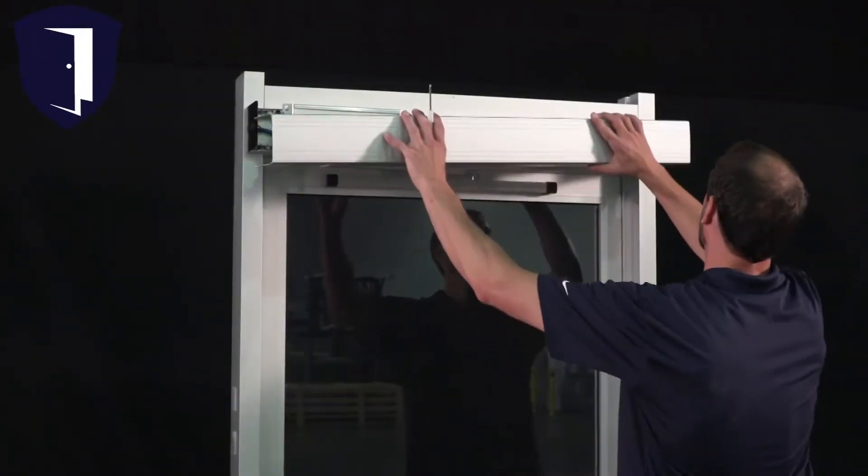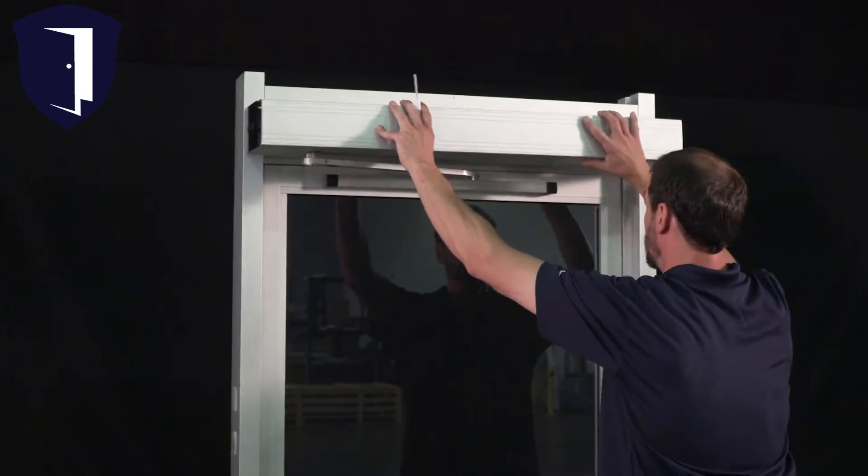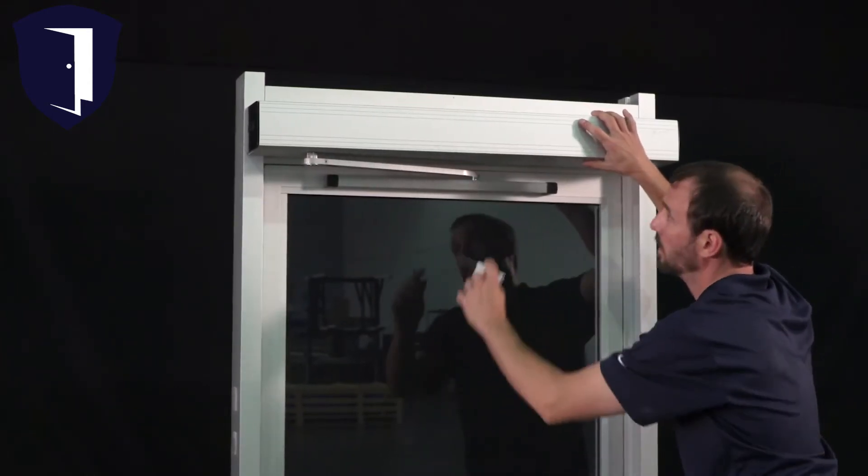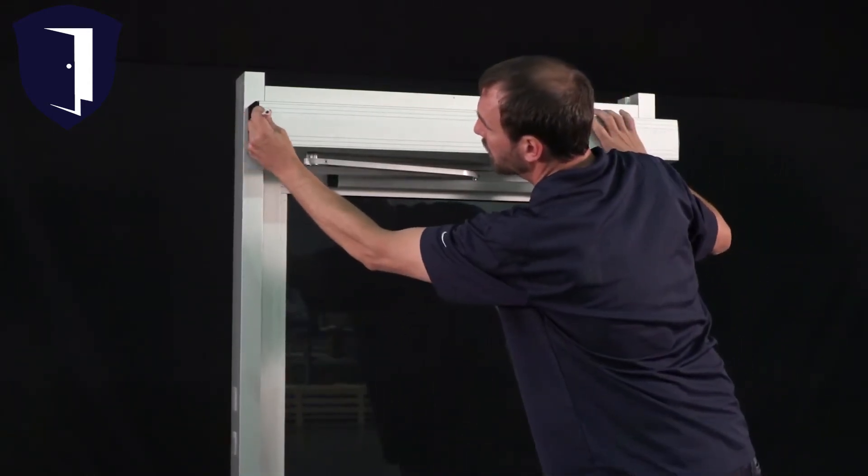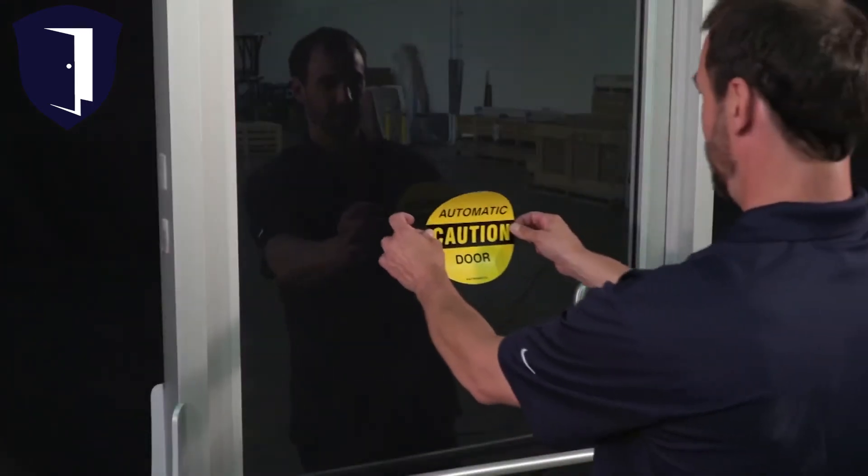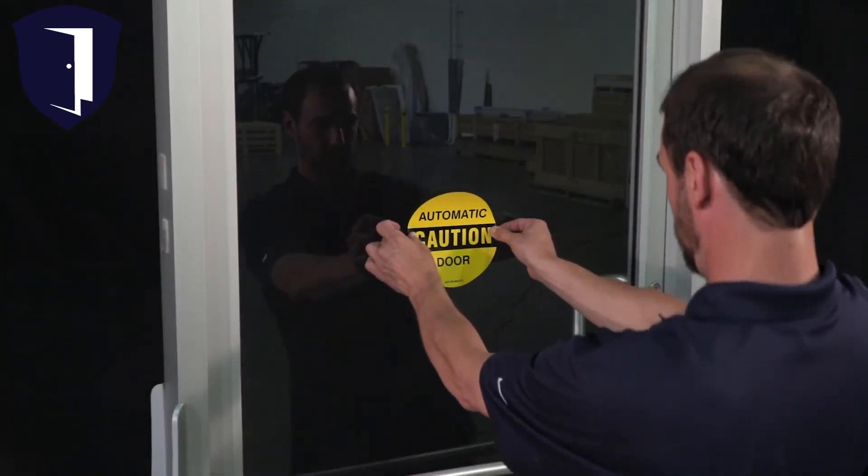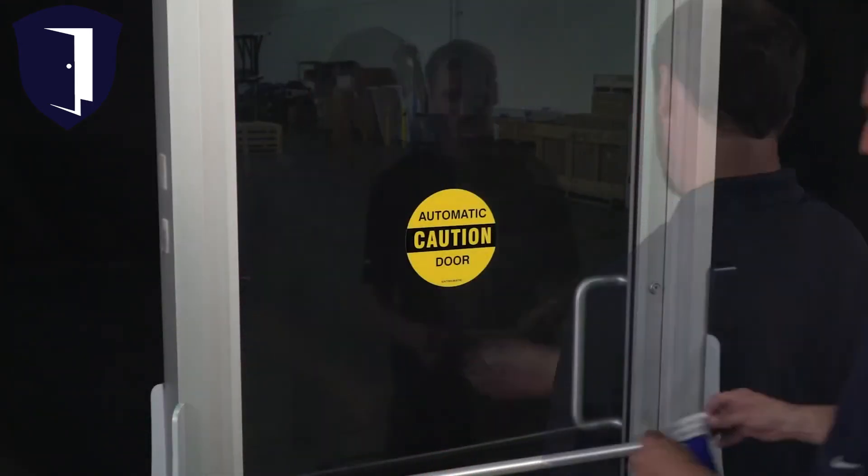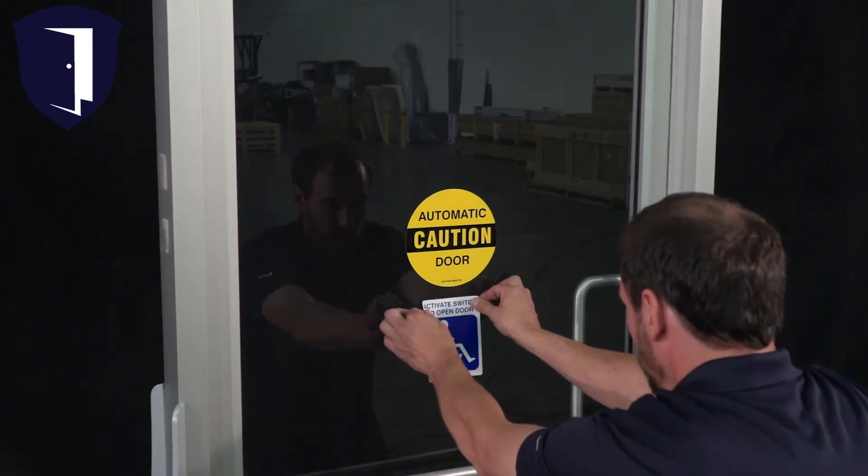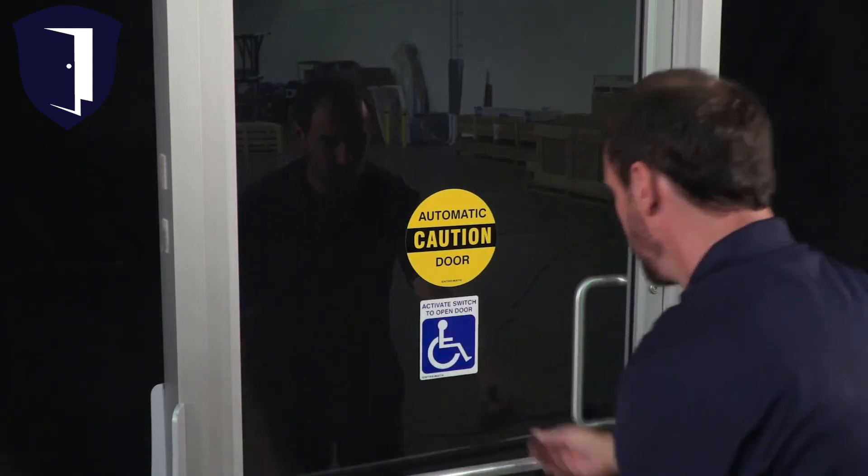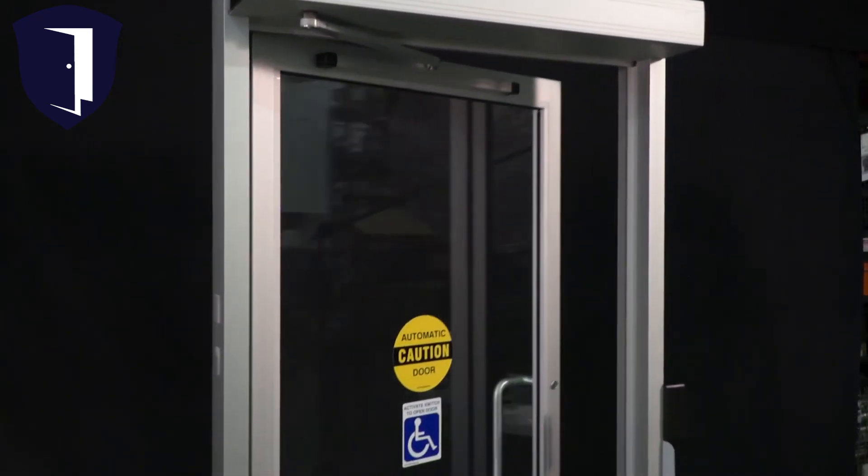To complete installation of the HA8LP, place the cover over the closer, being sure it fits completely over both end plates. Finally, put the yellow caution sticker and the wheelchair accessible sticker on the door between 38 and 62 inches from the finished floor. The DTEK HA8LP is ready for use.